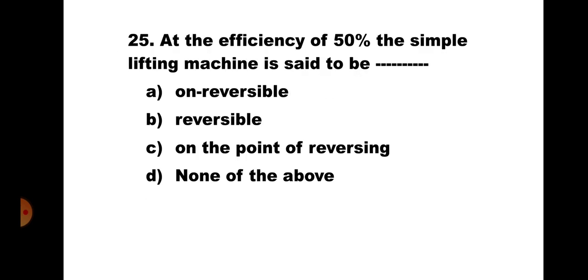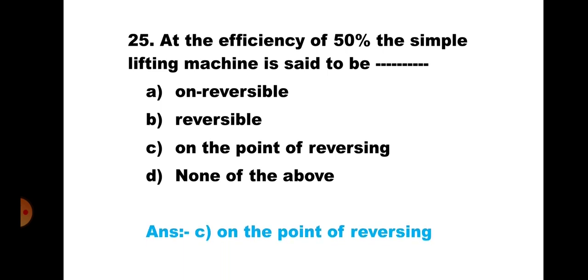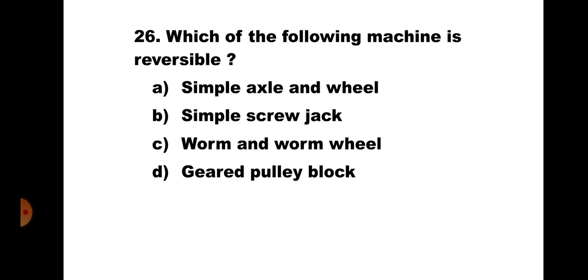Question number 25: At efficiency of 50%, the simple lifting machine is said to be: A) non-reversible, B) reversible, C) on the point of reversing, D) none of the above. If a machine is non-reversible at lower loads, as load increases efficiency increases. At a particular load where efficiency reaches 50%, it is on the point of reversing. The correct answer is C) on the point of reversing.